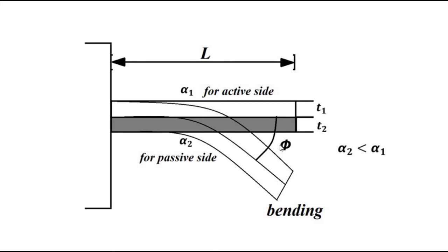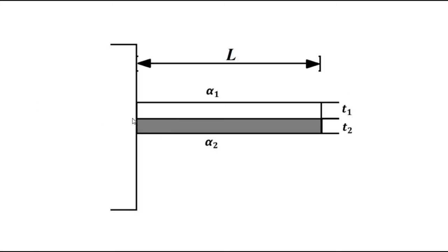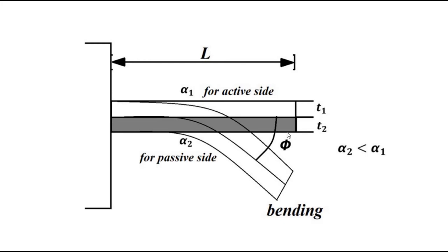The element bends from the active side to the passive side, forming an angle phi because of the temperature change. This angle is very important for establishing a relationship between the angular deflection and temperature change. Originally one end is kept fixed, then the element is brought into contact with the surface where temperature is to be measured, and it starts bending in the direction of the passive side.